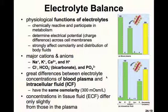The main cations we'll look at are sodium, potassium, calcium, and hydrogen ions. The main anions will be chloride, bicarbonate, and phosphate. We'll leave further examination of hydrogen and bicarbonate until the next section.